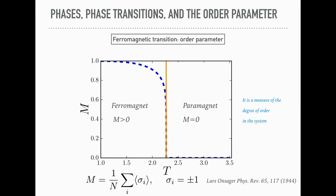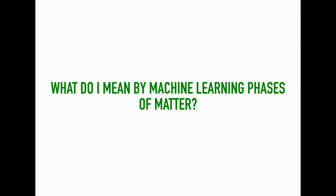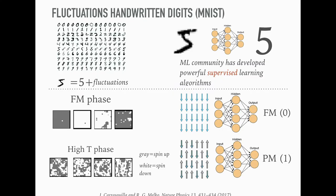This ferromagnetic transition has this order parameter, which is basically the average over the spins, which is finite at low temperature, and it transitions around 2.26 toward this paramagnet, as studied analytically by Onsager in the 40s. That's my system, but what do I mean by machine learning and supervised learning in this context?